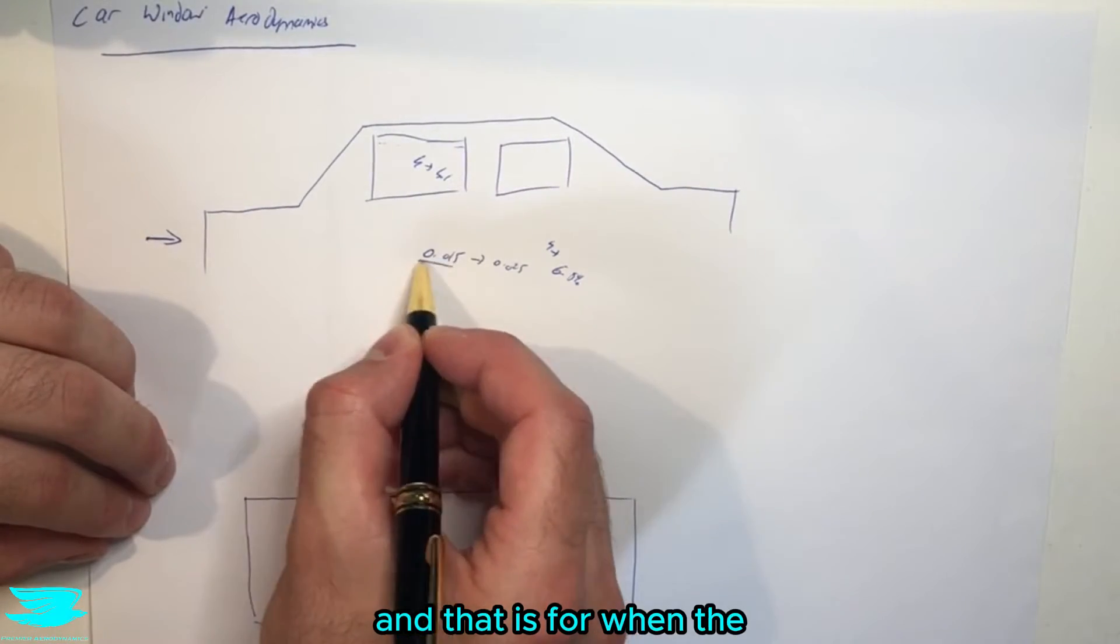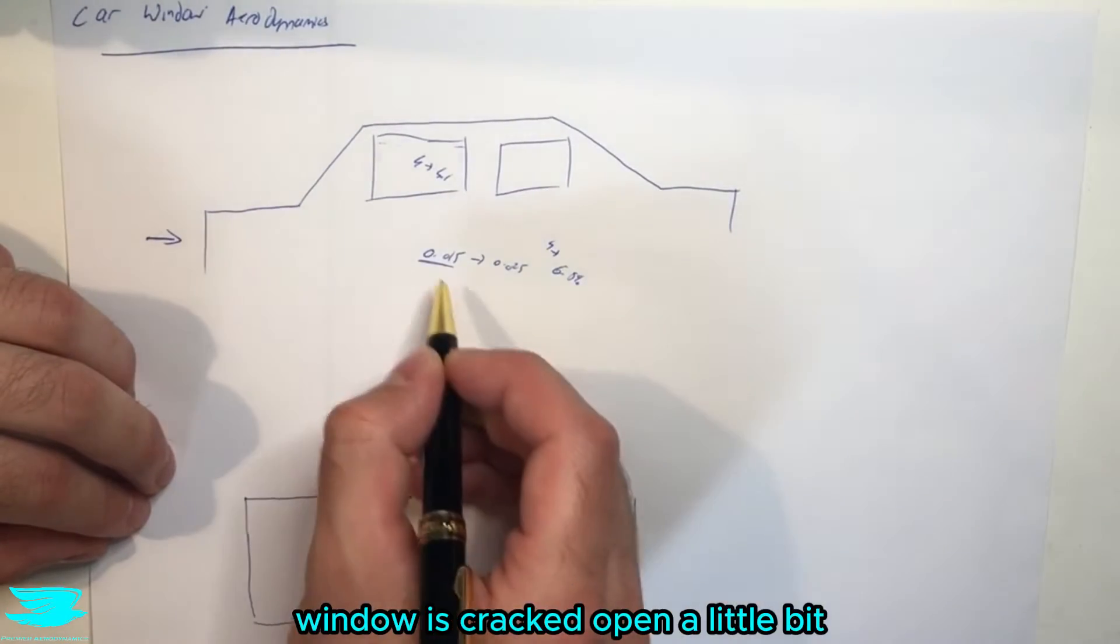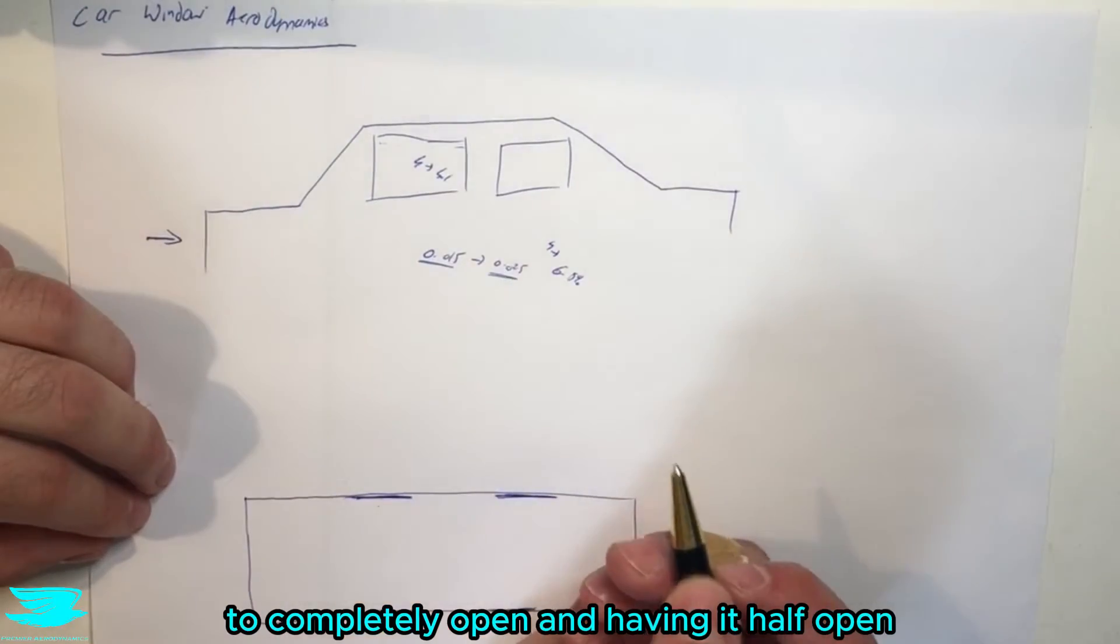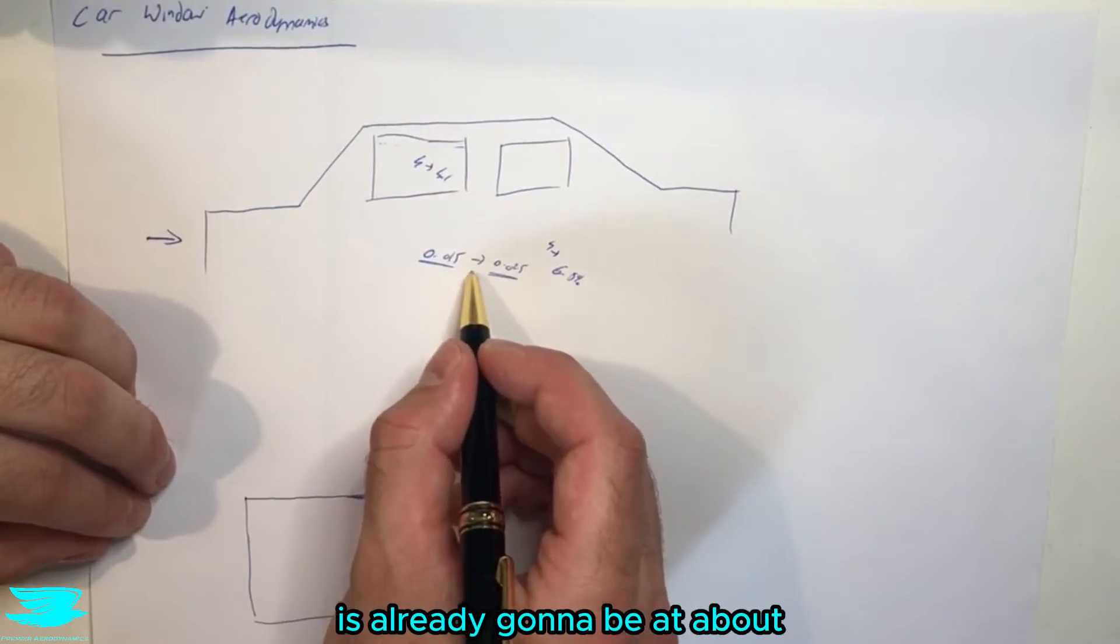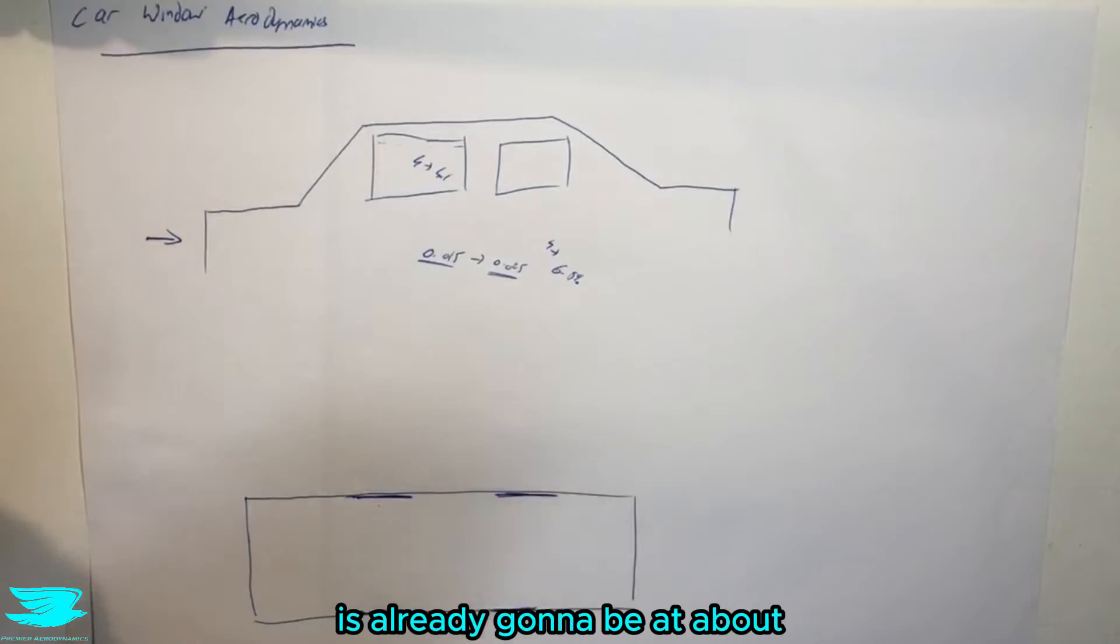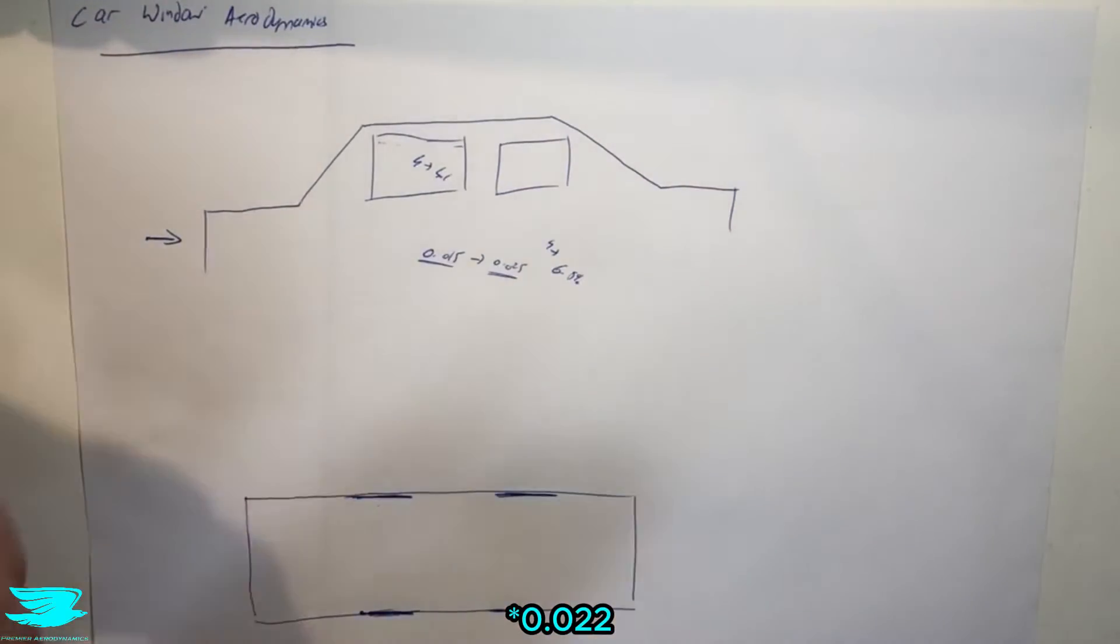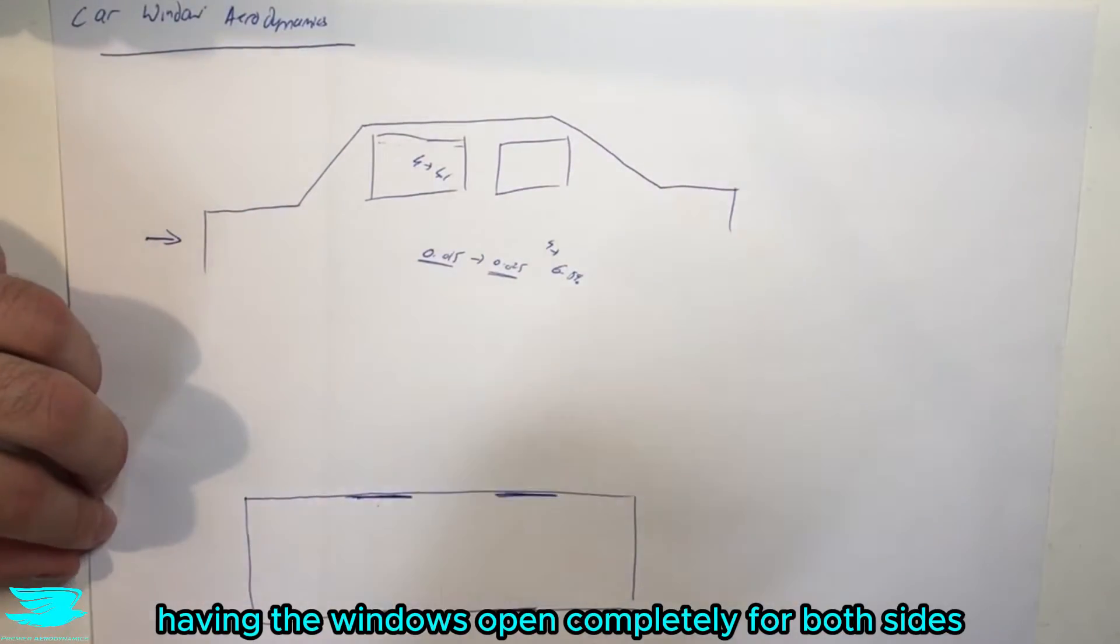And that is for when a window is cracked open a little bit to completely open. And having it half open is already going to be at about 0.022. So again, have the windows open completely for both sides.